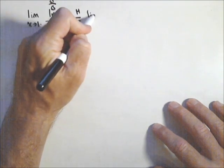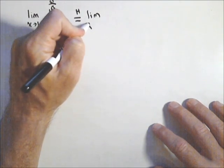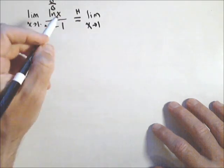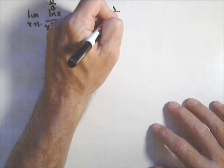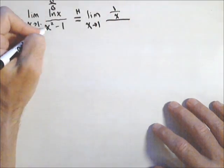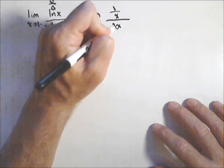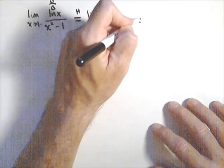Now, L'Hopital says I take the derivative of the top and the bottom and recalculate my limit. So on top, it's one over x. On bottom, it's two x. And now if I can calculate by direct substitution, I'm done.